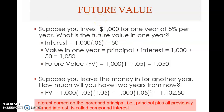Now we start with the first key concept in this clip: future value. Suppose you invest one thousand dollars for one year at five percent per year. What is the future value in one year? The interest is computed as the principal — one thousand dollars — multiplied by five percent, which is 0.05, giving you fifty dollars.